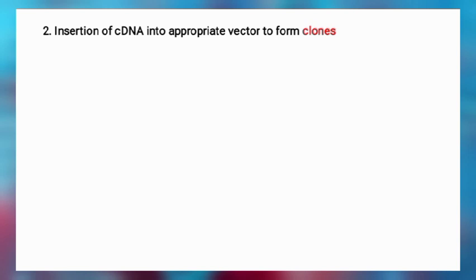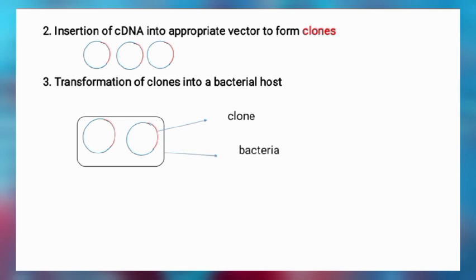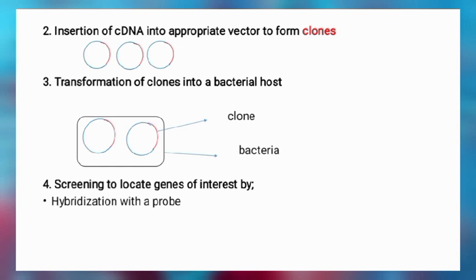After attaching the linkers to the ends of the double-stranded cDNA, the next step is to insert the cDNA into an appropriate vector to form a clone. The clones are then transformed into a bacterial host for replication to produce multiple copies. With multiple copies, the gene of interest can be screened and located. There are several ways of screening: hybridization using a DNA probe, immunological methods like ELISA and chemiluminescence assay, or in modern practice, PCR amplification. Thank you very much for watching this video — please don't forget to subscribe.